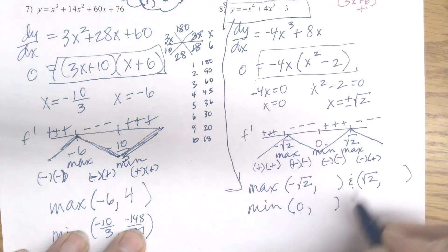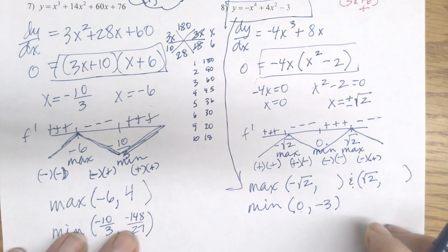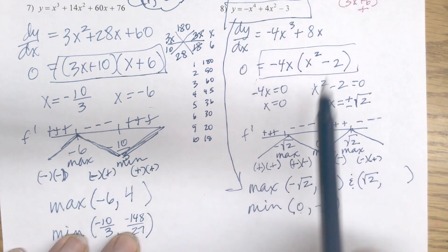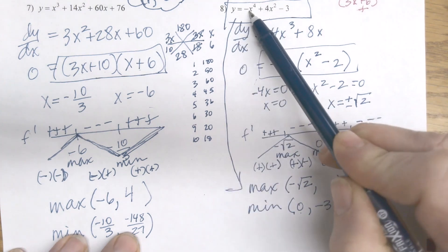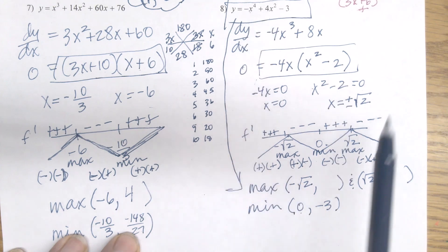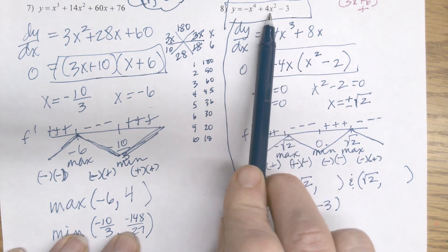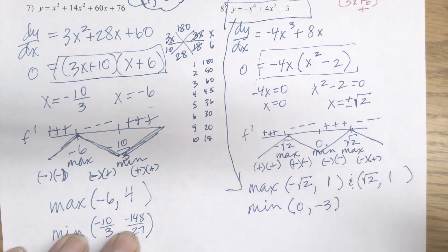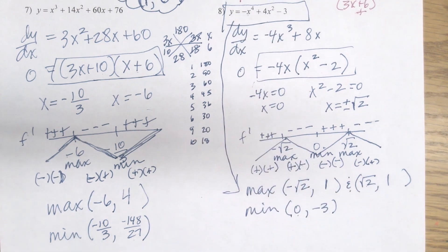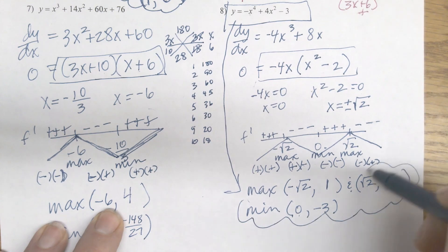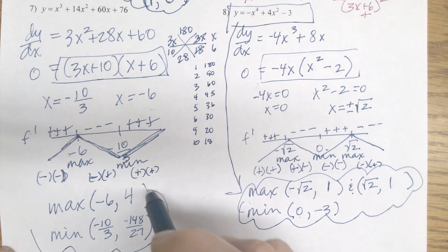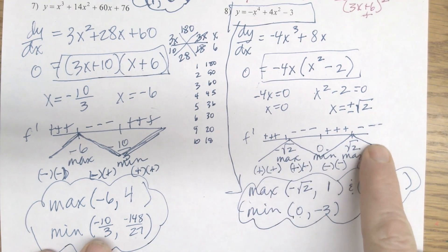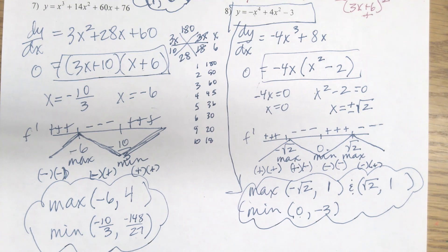Going back to plug in: x equals 0 gives negative 3, that math is easy. Plugging in the negative square root of 2: that's negative 4 plus 8 minus 3, which gives 1. And the positive square root of 2 gives the same result: 1. So I have a max at (negative square root of 2, 1) and (positive square root of 2, 1), and a min at (0, negative 3). First derivative, set it equal to 0, check your f prime chart for max or min, then find the missing point. If you have any questions, contact me — I'll talk to you in class.